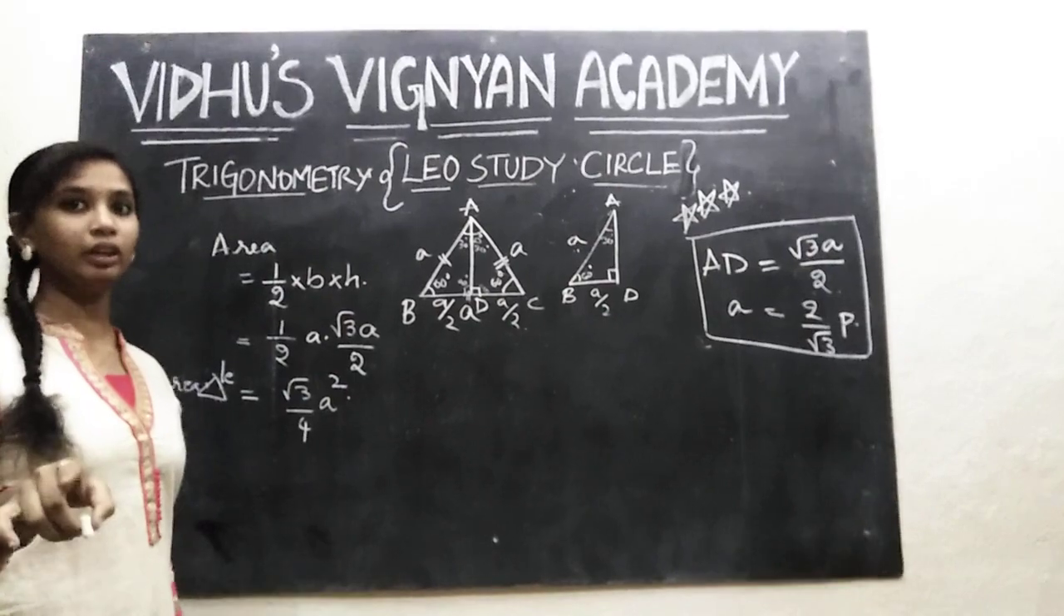Now let's look at the area of the equilateral triangle. The area is half base into height. Half times A times root 3 by 2 A gives us root 3 by 4 A square. Another important formula: area of an equilateral triangle is root 3 by 4 A square. You should represent an equilateral triangle with these three marks showing all three sides are equal.